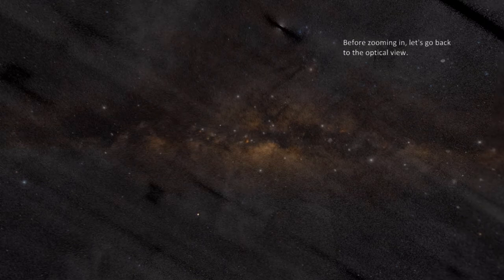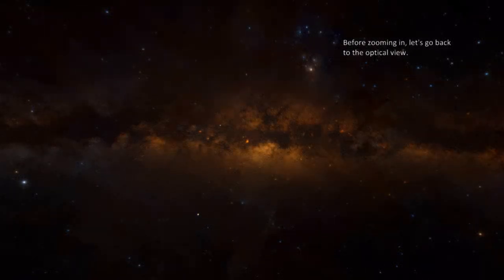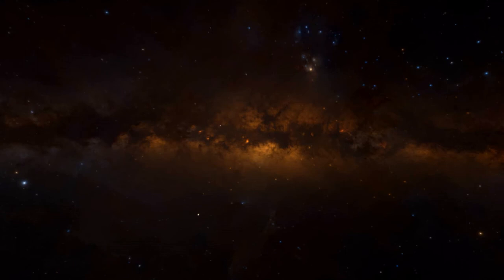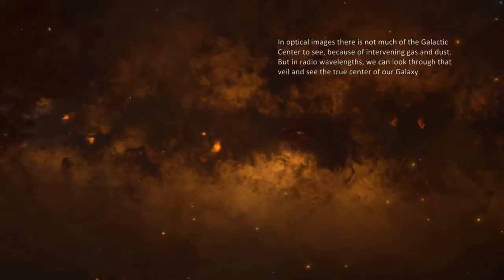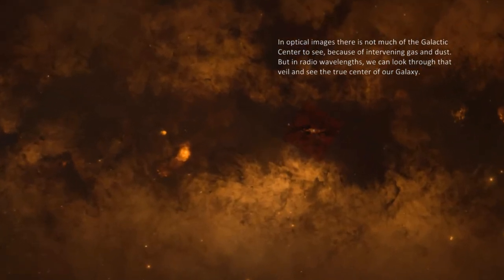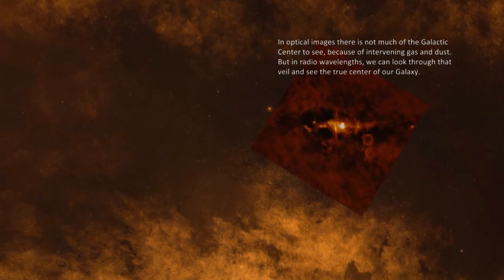Before zooming in, let's go back to the optical view. In optical images, there's not much of the galactic center to see because of intervening gas and dust. But in radio wavelengths, we can look through that veil to see the true center of our galaxy.